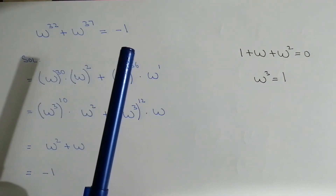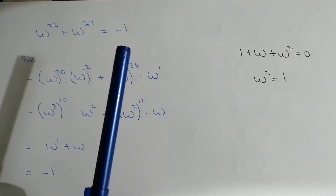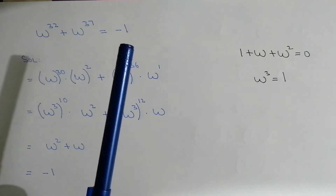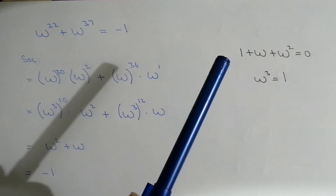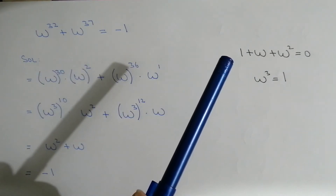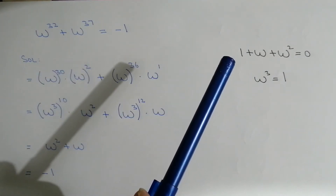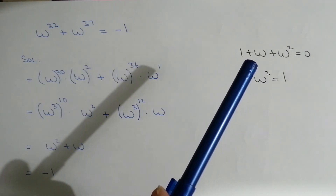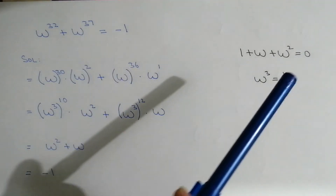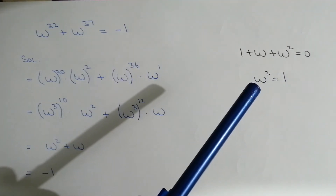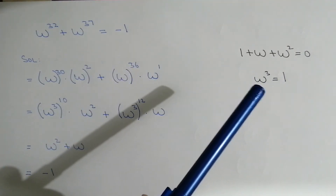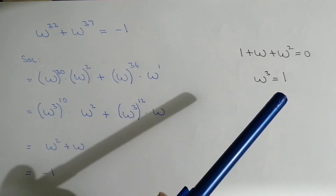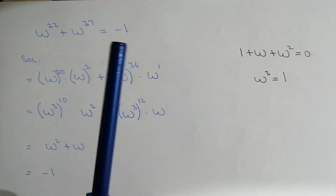In these kinds of problems we must remember the two equations. The first one is 1 plus omega plus omega square is equal to 0. The other one is omega cube is equal to 1.